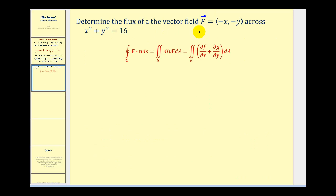Here we want to measure the flux of a vector field with components negative X, negative Y, across the circle X squared plus Y squared equals 16, and here we'll assume the orientation is counterclockwise, so that we satisfy the conditions needed to apply the flux form of Green's Theorem.